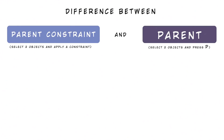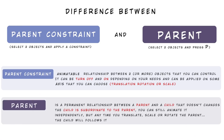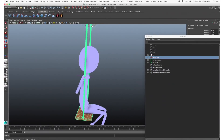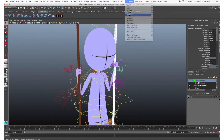Let's quickly see the difference between parent constraint and parent. The parent constraint is a relationship between two or more objects that you can control — it can be turned on and off, and can be applied on specific axes (translation, rotation, scale). Parent is a permanent relationship between a parent and child that doesn't change; the child is subordinate to the parent no matter what, but you can still animate it independently. Any time you translate, scale, or rotate the parent, the child follows. So now the two locators follow the swing — select one locator and the hand control and create the parent constraint. Do the same for the other locator.